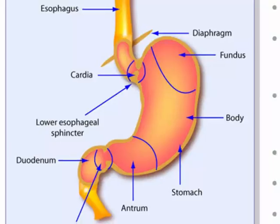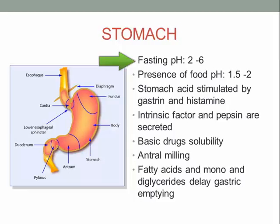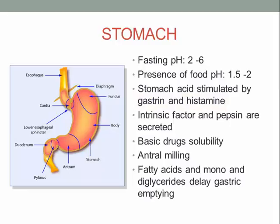The fasting pH of the stomach is 2 to 6, while in the presence of food it drops to 1.5 to 2. Gastric acid is stimulated by gastrin and histamine. Gastrin is a hormone released from the G cells of the stomach and duodenum, which stimulates gastric acid secretion. Other secretions include intrinsic factor, which helps in the absorption of vitamin B12, and pepsin, which is involved in proteolysis.